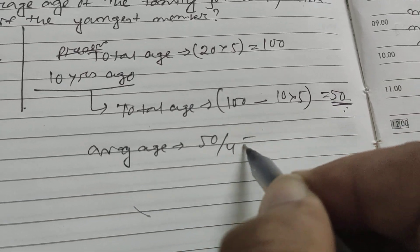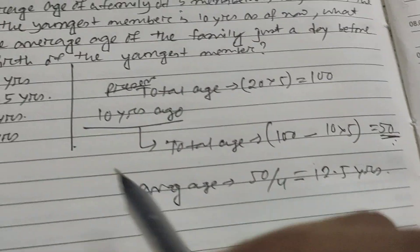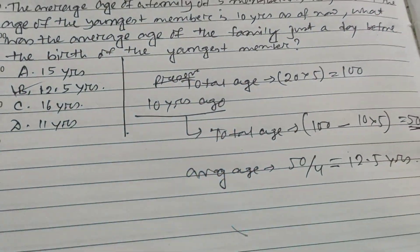50 divided by 4, which is 12.5 years. So B is the right answer.